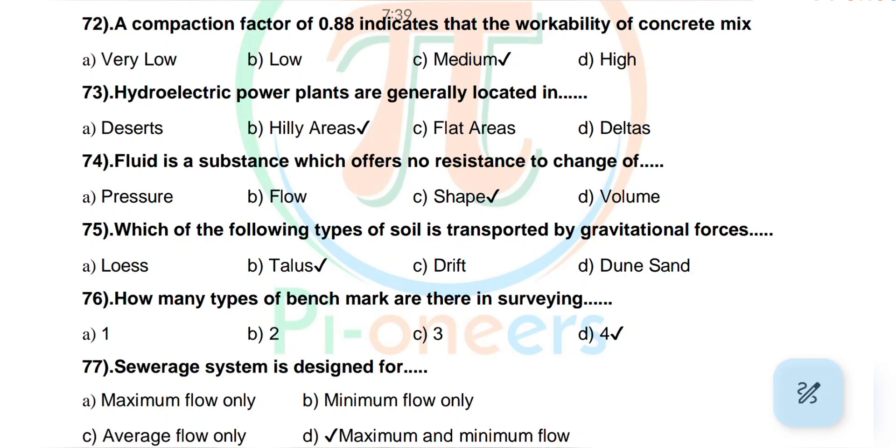Question number 75: Which of the following types of soil is transported by gravitational forces? Options are loess, talus, drift, dune sand. Correct answer: talus. Question number 76: How many types of benchmark are there in surveying? Options are 1, 2, 3, 4. Correct answer: 4.